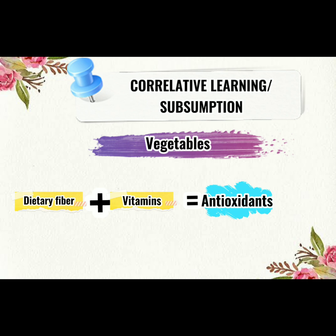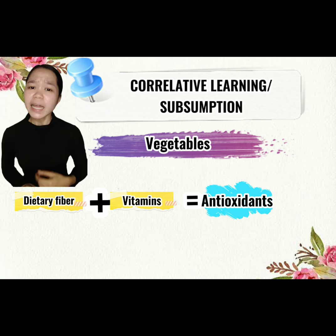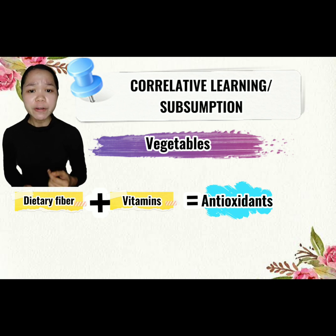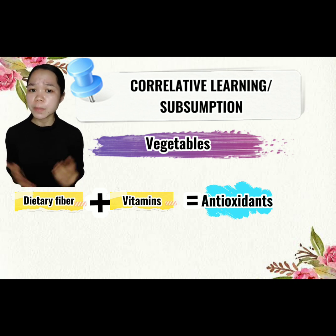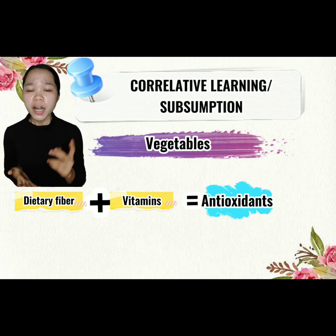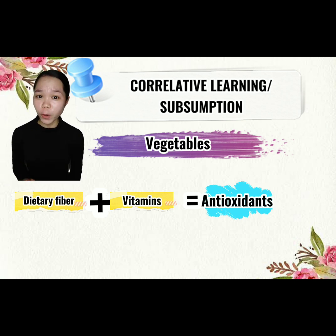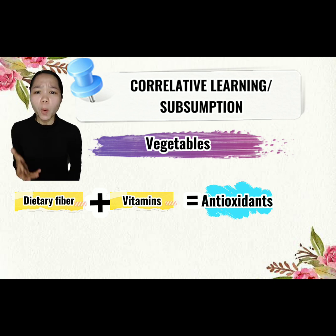In order to accommodate this new information, you have to extend your concept of a vegetable beyond the previous concept of that vegetable. Unlike derivative subsumption, which only acquires basic knowledge, here in correlative subsumption you are creating a higher-order concept using your basic knowledge. Therefore, it expands your thinking strategies in order to understand,